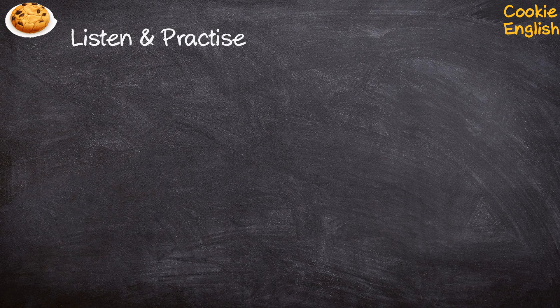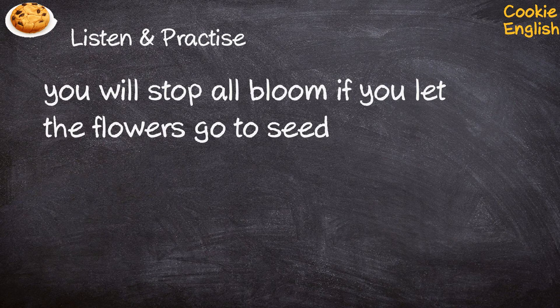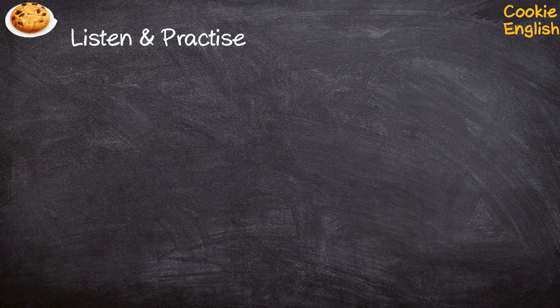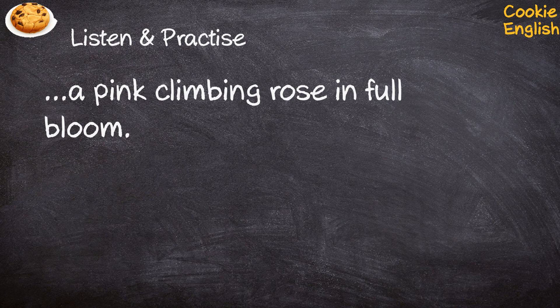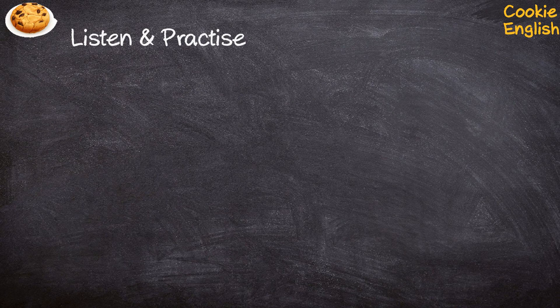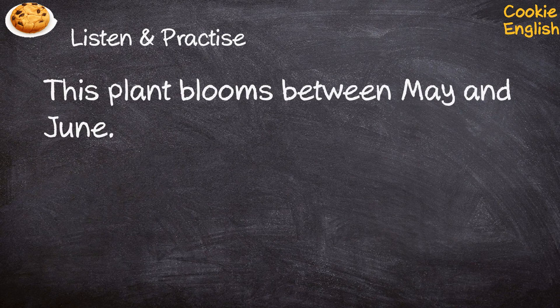Listen and practice. You will stop all bloom if you let the flowers go to seed. A pink climbing rose in full bloom. This plant blooms between May and June.